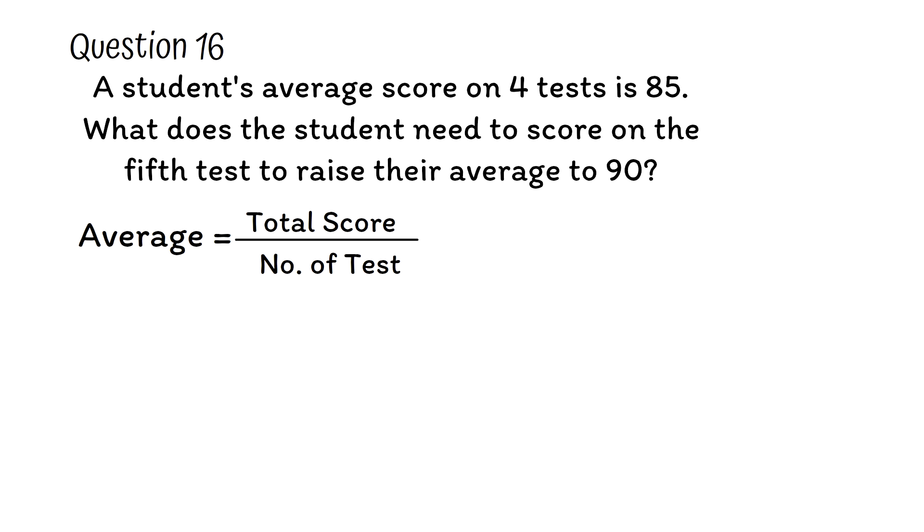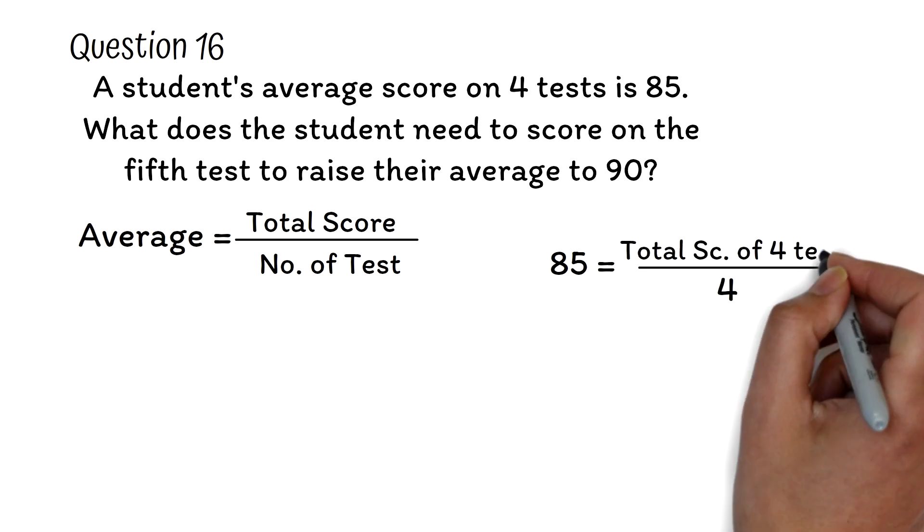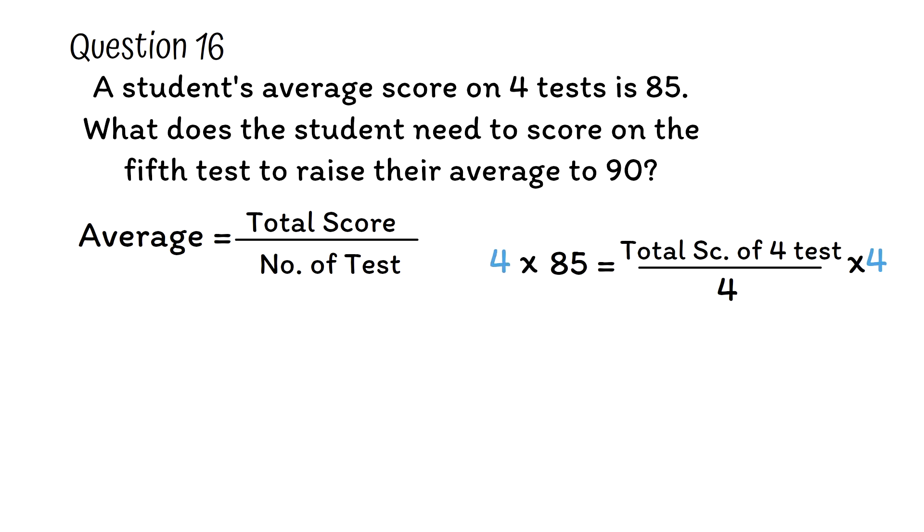For the four tests, we have been given the average as 85. The number of tests taken is 4. We can find the total score. Multiply both sides by 4. The 4 will cancel out. 4 times 85 is 340. So the total score for the four tests is 340.